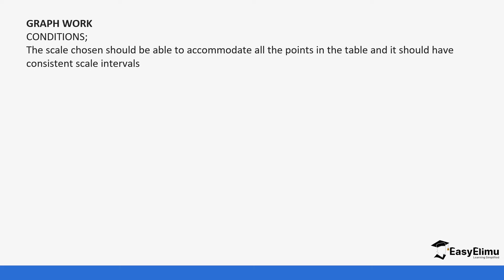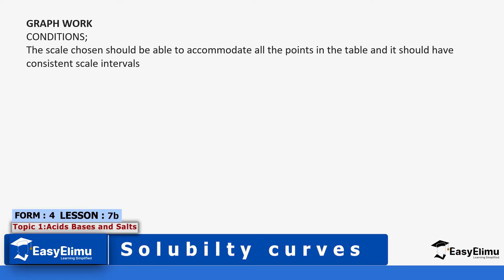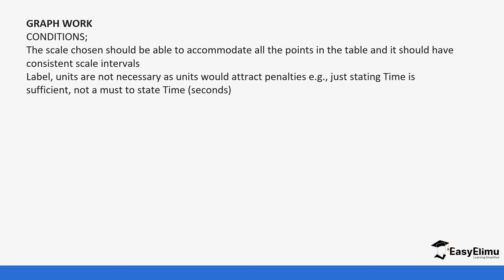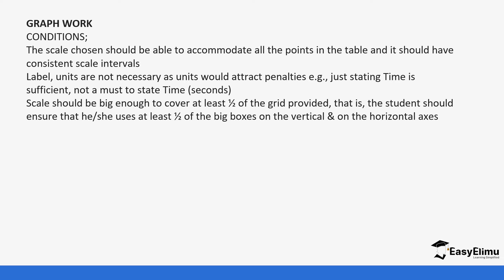The scale chosen should be able to accommodate all the points in the table and should have consistent scale intervals. It is important that your scale has intervals. Labels — units are not always necessary. For example, if you have been asked about time, you don't need to put a specific unit like seconds or minutes. But if units have been given, include them — otherwise you will be penalized for wrong units.